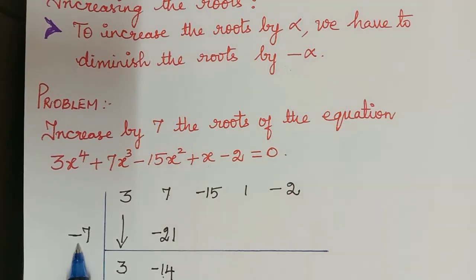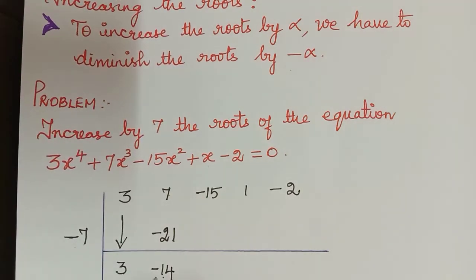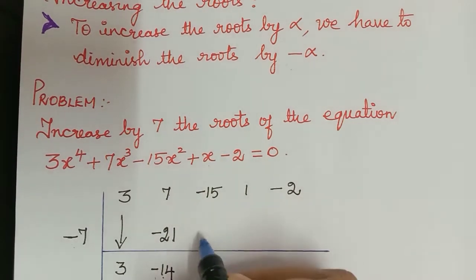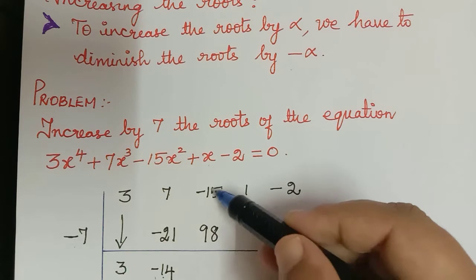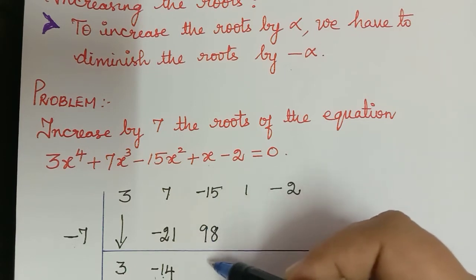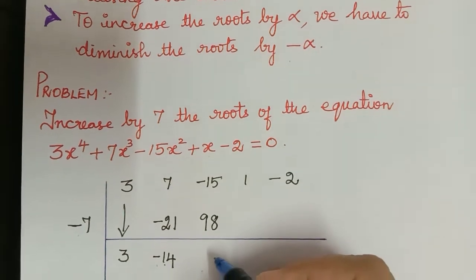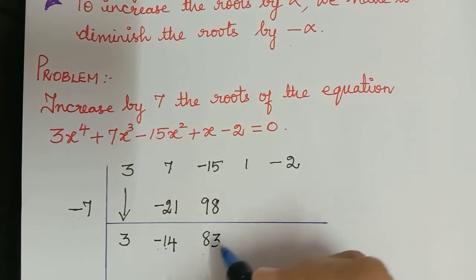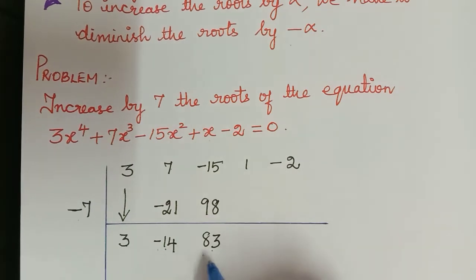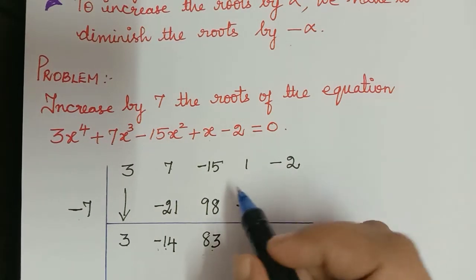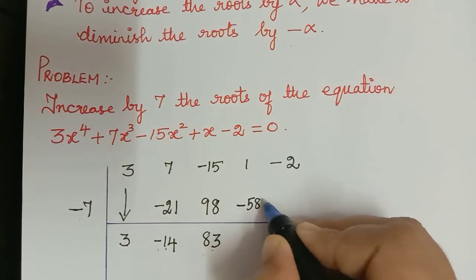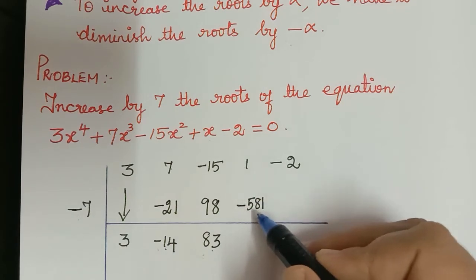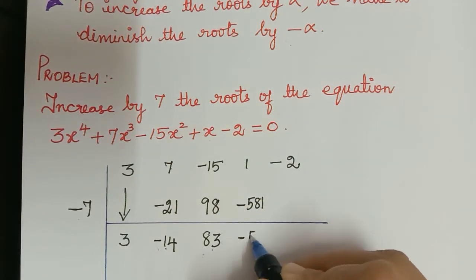Then negative 14 multiplied with negative 7 — both are negative, so when multiplied it becomes positive, and 7 multiplied by 14 is 98. Then negative 15 plus 98: we subtract and write the largest number's sign, so we obtain positive 83. Now 83 multiplied with negative 7 is negative 580.